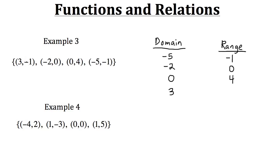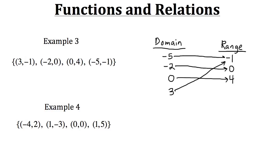For example, the input three has an output of negative one, so we go to three from our domain and connect it to negative one from the range. Similarly, the input negative two connects to zero. The input zero connects to four. And for our last ordered pair, negative five connects to negative one from the range. That's the basic idea behind a mapping diagram.